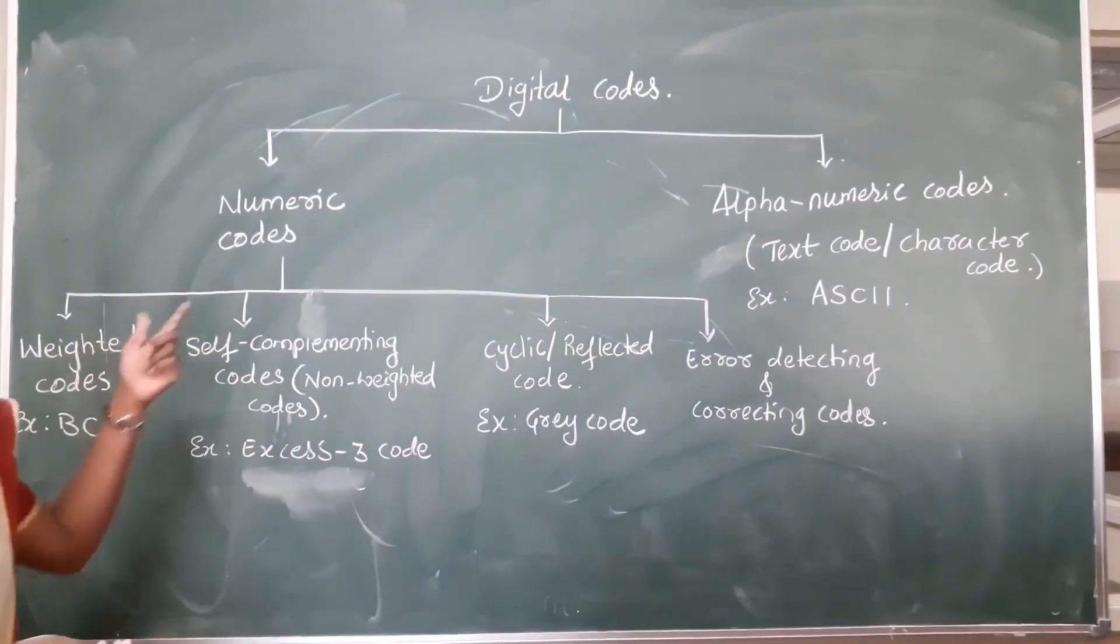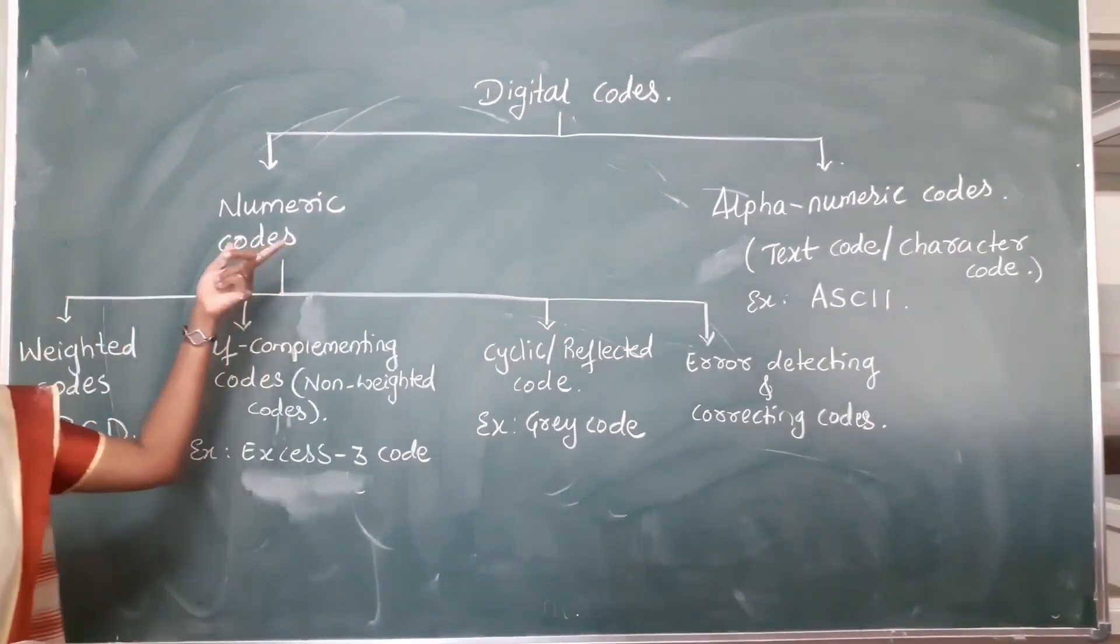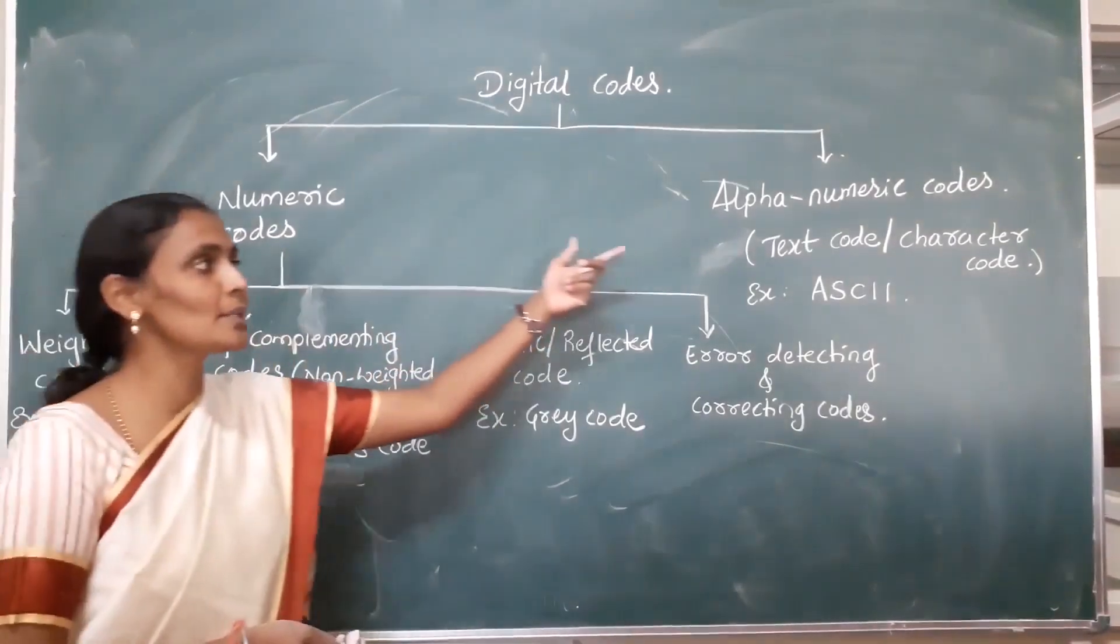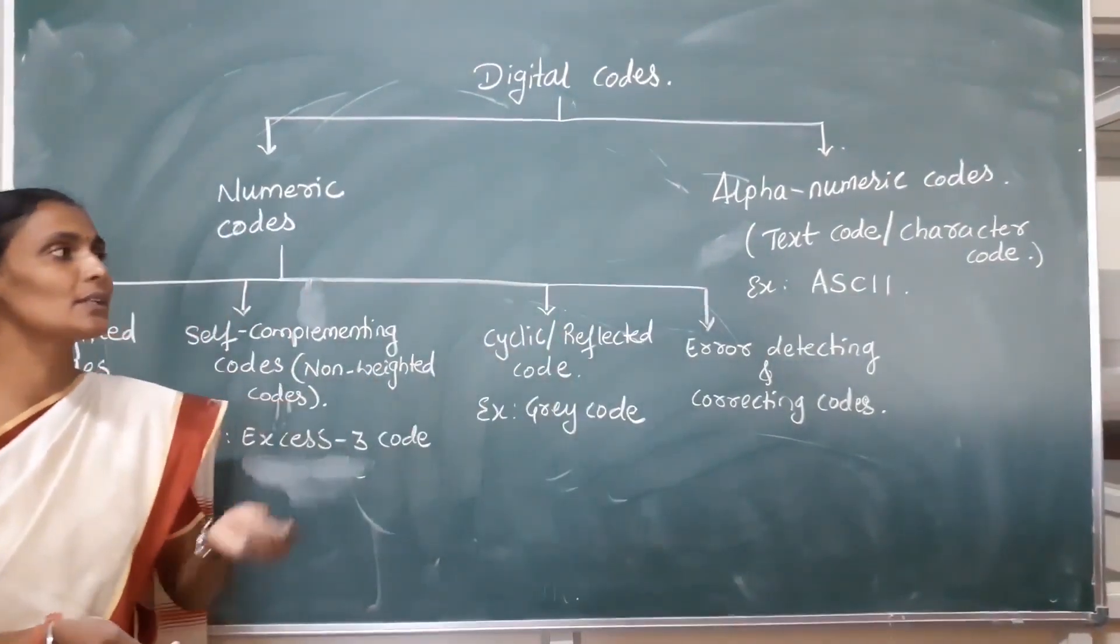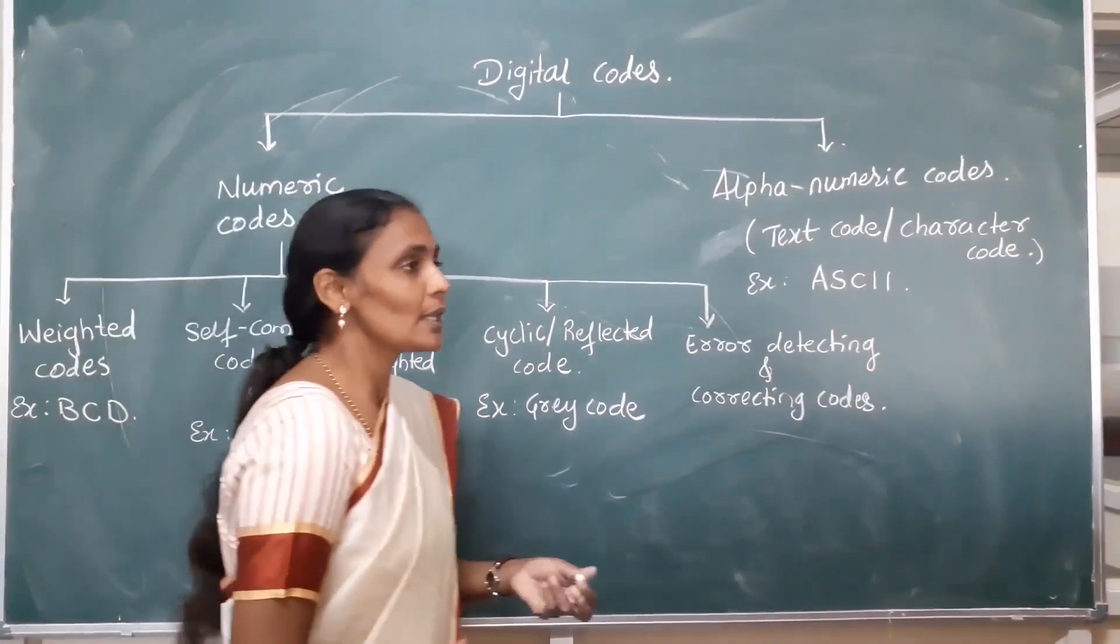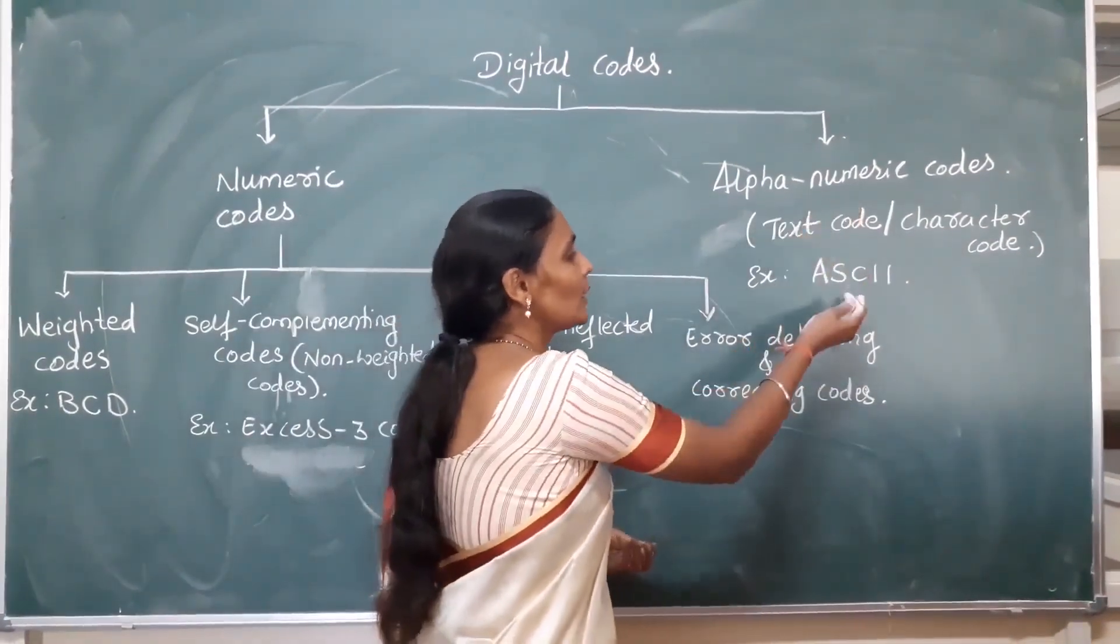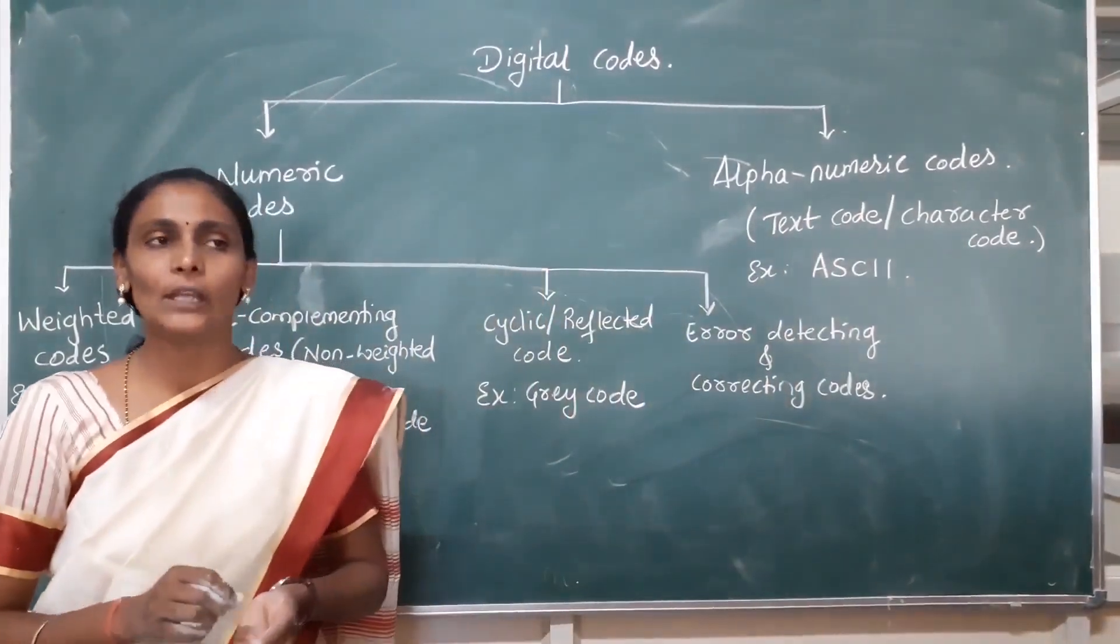Digital codes can be divided into two types. First comes numeric code, second comes alphanumeric code, which is also called text code or character code. The best example for alphanumeric code is ASCII.